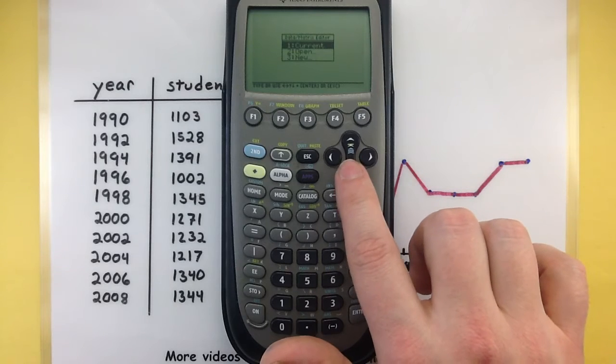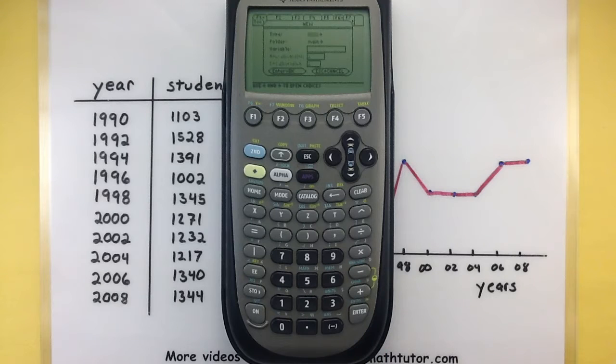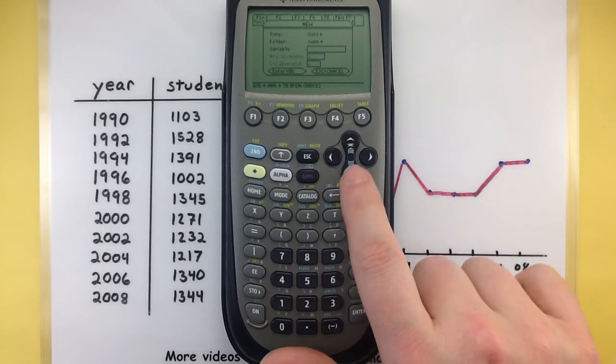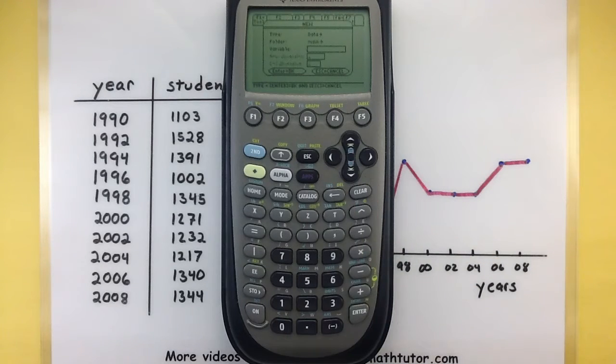Let's go ahead and select a new data matrix, so we'll go down to 3 for new, and now we get to choose where we want to store it and what we want to call it. I like to leave mine just in the main folder, but you can set up other folders. As for the variable, that's what you want to call it, and you can pretty much call it anything as long as it's not reserved. Since I'm talking about students here, I'm going to call it S for students.